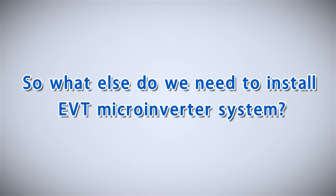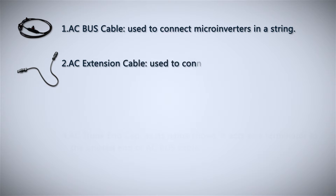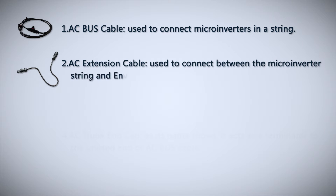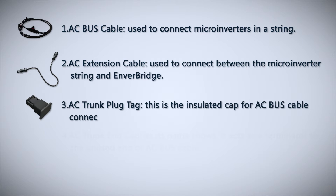What else do we need to install the EVT microinverter system? First, the AC bus cable, used to connect microinverters in a string. Second, the AC extension cable, used to connect between the microinverter string and Enver bridge. Third, the AC trunk plug cap, which is the insulated cap for AC bus cable connectors.